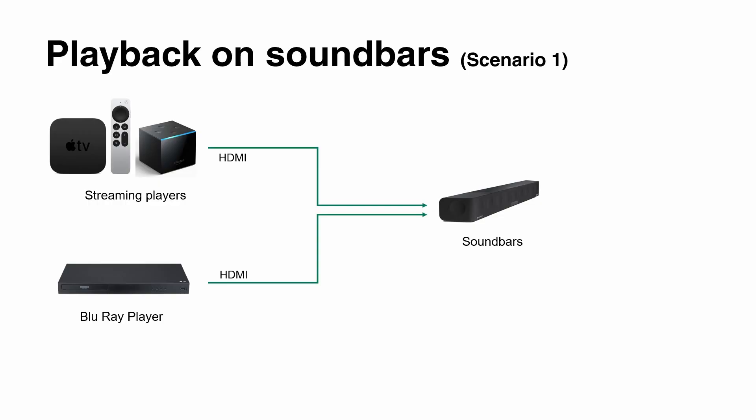One important thing with soundbars is that most of them have a USB port. So when you're working on an immersive audio mix, you can easily create an MP4 down-mix — like an approval mix — put that on a USB stick, plug it into your soundbar, and play it back to get an idea of how your immersive audio mix sounds on a soundbar before it's released on a streaming service.